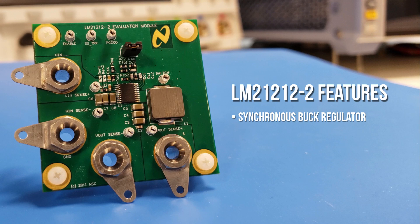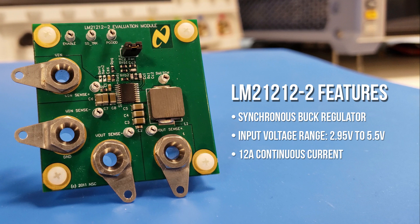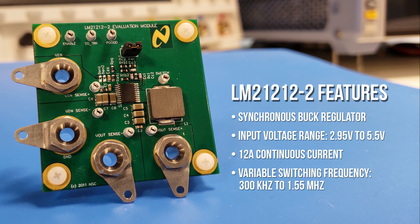The LM2 is a synchronous buck regulator. It has an input voltage range from 2.95 volts to 5.5 volts, capable of delivering 12 amps of continuous output current and a variable switching frequency between 300 kilohertz and 1.55 megahertz. It is also available in a small outline package, which makes it very easy to hand solder. These features give me the flexibility to explore different power scenarios instead of using a switching regulator that has a fixed voltage or fixed frequency.